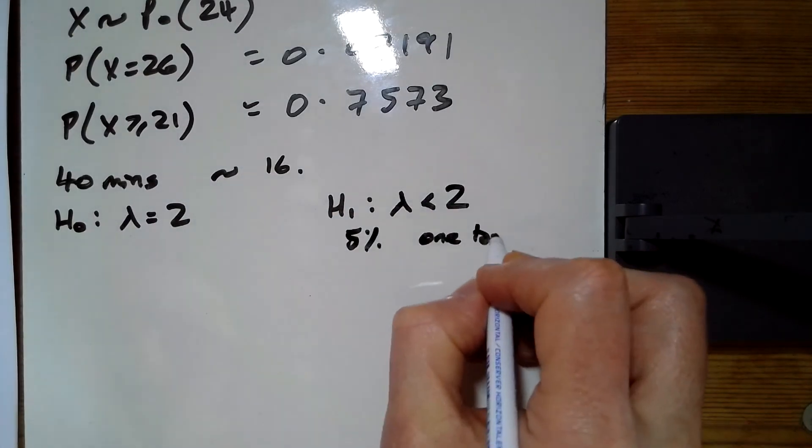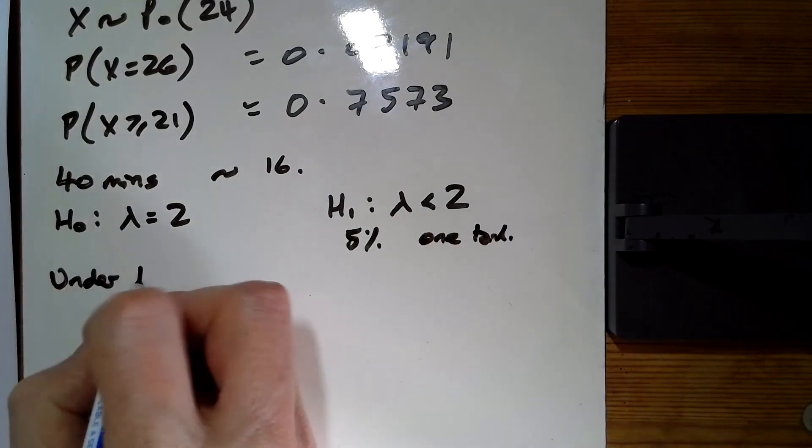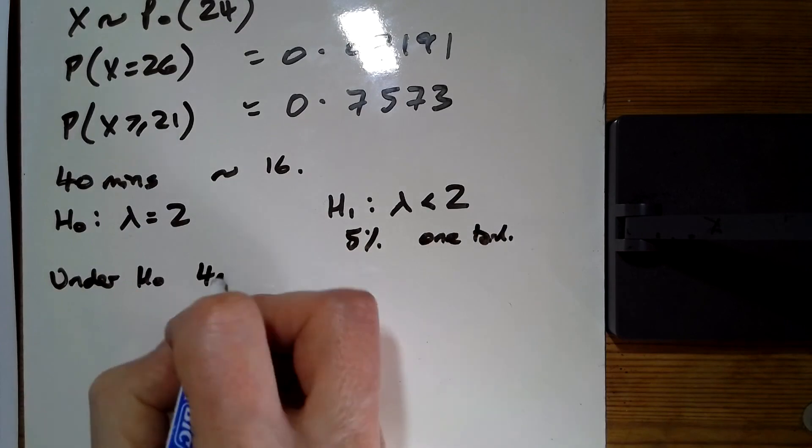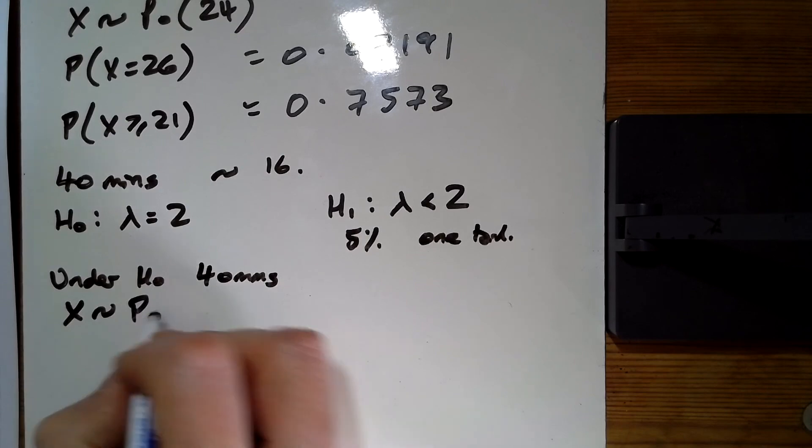Under H₀, for 40 minutes, X is Poisson with a mean of 16.